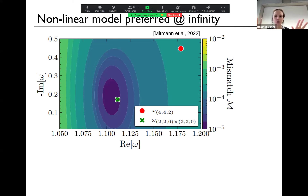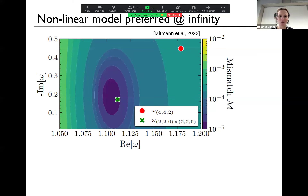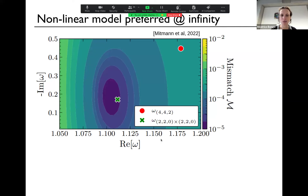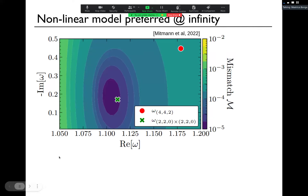Two different groups published this at the same time. I'm showing a plot here from one of those groups — the other paper has more or less an identical plot. On the horizontal axis we have the real part, and on the vertical axis the imaginary part of a frequency.